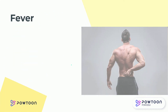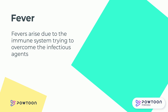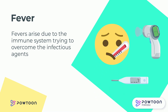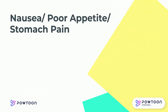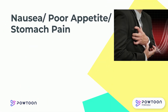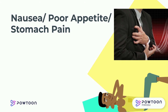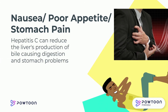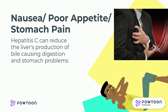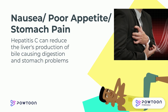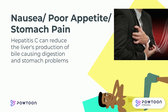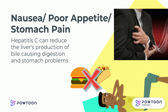Similarly, fevers can occur as a result of the body continuously fighting off the infectious agents of the virus. Nausea, poor appetite, and stomach pain are also symptoms of HCV. The inflammation of the liver caused by the virus decreases the production of bile. As mentioned earlier, bile helps with the digestion and breaking down of food into fatty acids. Therefore, the decrease in bile can cause nausea, poor appetite, and stomach pain.